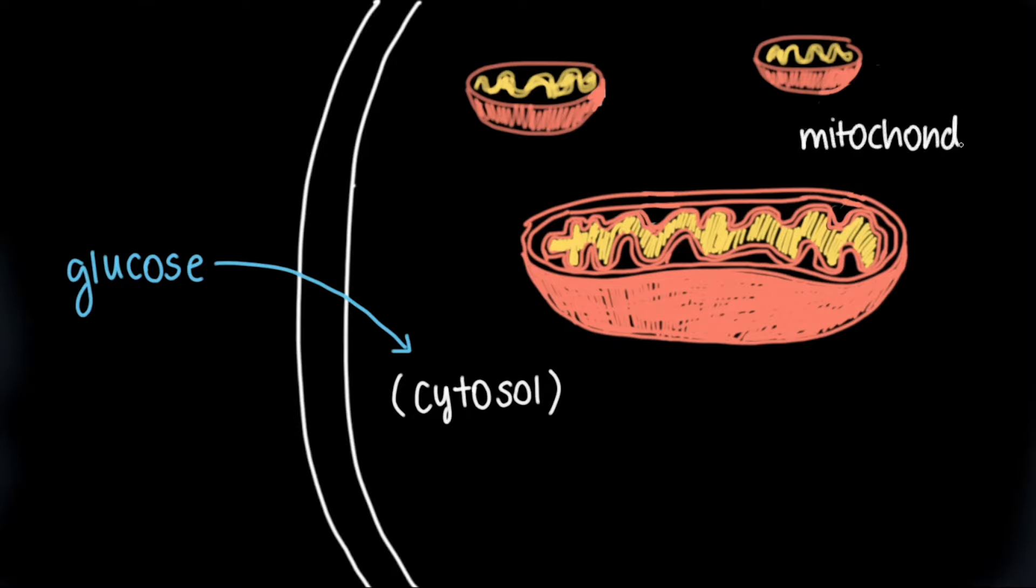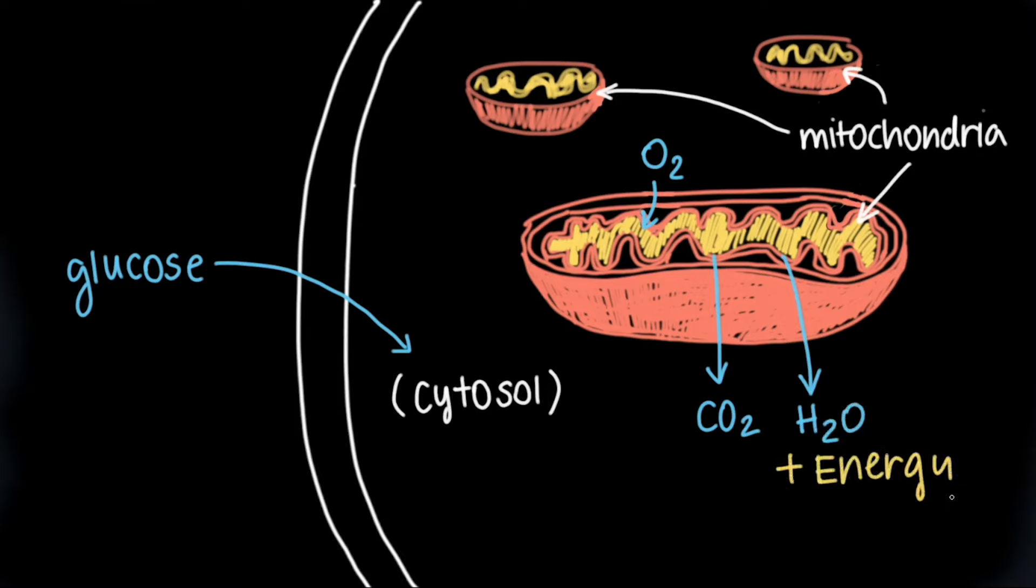The rest of the reactions happen in mitochondria, with oxygen as an input and carbon dioxide and water as outputs. Together, these chemical reactions result in an overall release of energy.